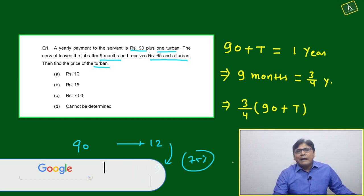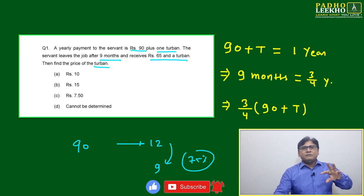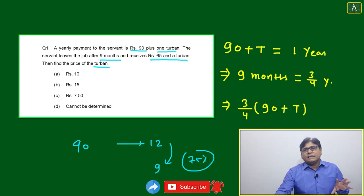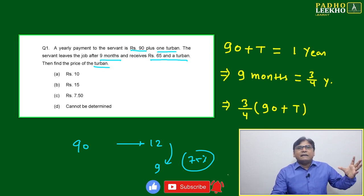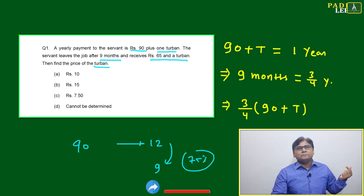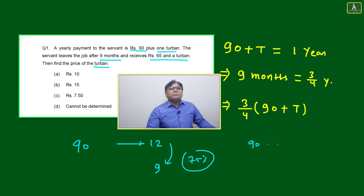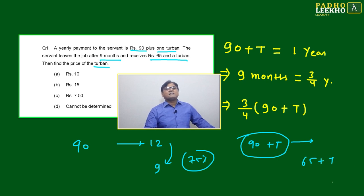One thing is very clear: whatever contract happened, 75% of time means 75% only he has done, 25% he left. Means whatever salary will be there, 25% will be deducted. 25% of what? Of total, means 90 plus turban. That 25% will be deducted, means 75% will be equal to 65 plus T.